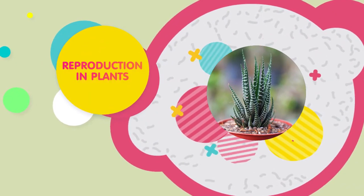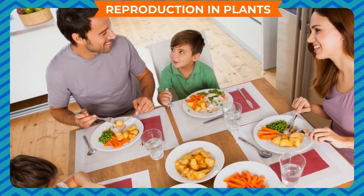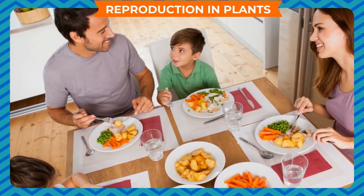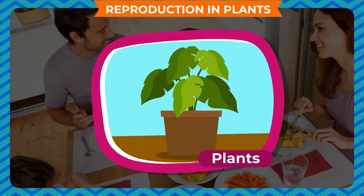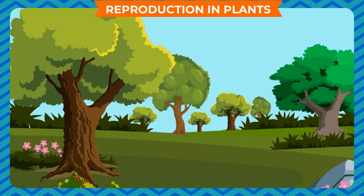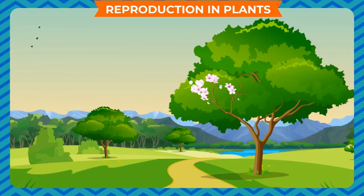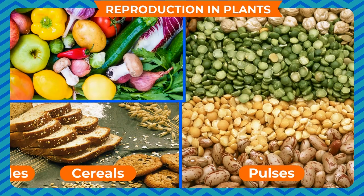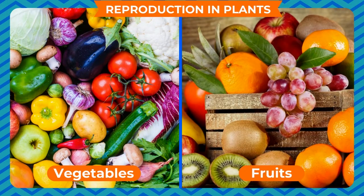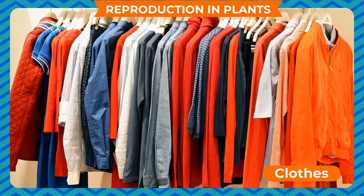Reproduction in plants. Living things cannot survive without food. Human beings and animals depend on plants for their food. Plants are a very important part of our environment and are useful to us in many ways. Plants are the source of various food items like cereals, pulses, vegetables, fruits, and fibers like cotton and jute for our clothes.